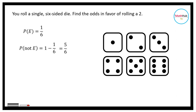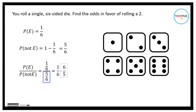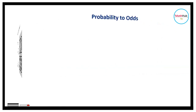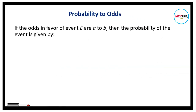Therefore, the odds in favor of rolling a 2 is equal to P(E) divided by P(not E), which is 1/6 divided by 5/6. That is the same as 1/6 times 6/5 — taking the reciprocal of the denominator — giving 1 over 5. So the odds in favor of rolling a 2 are 1 to 5.